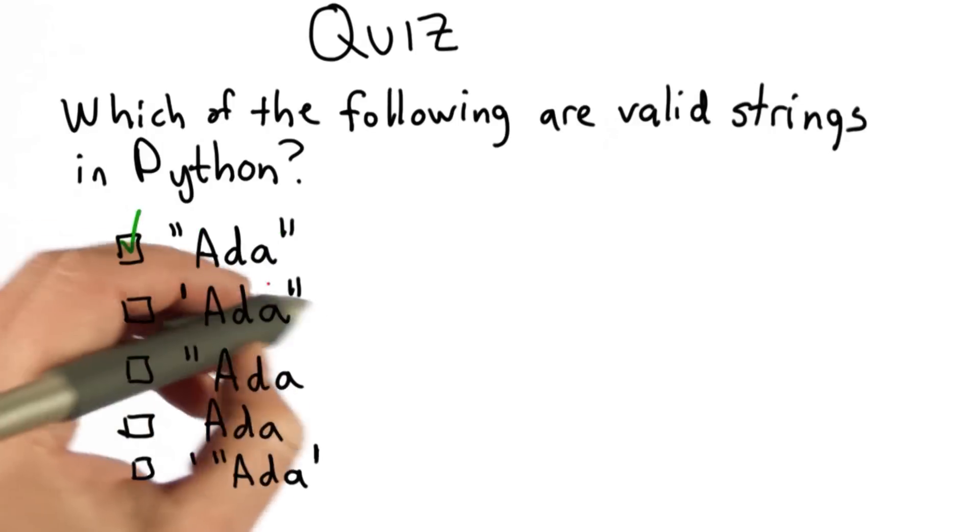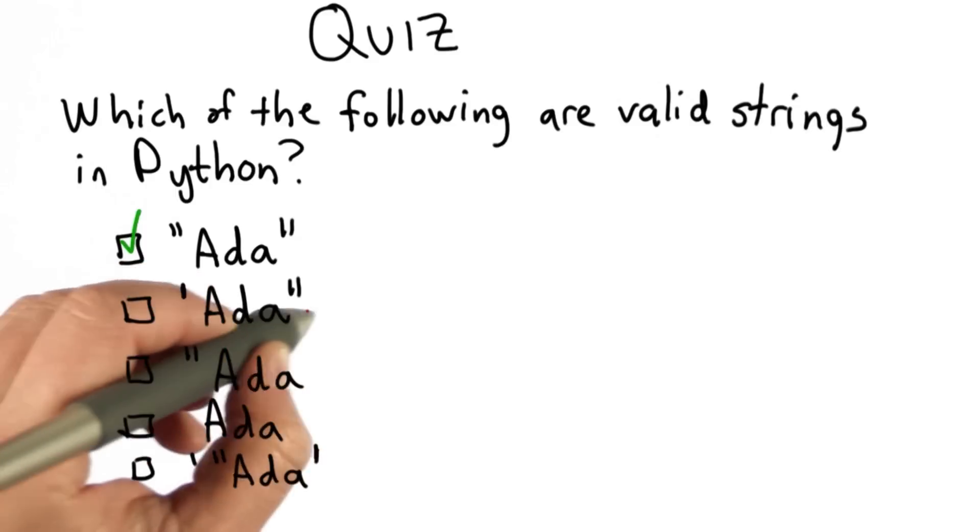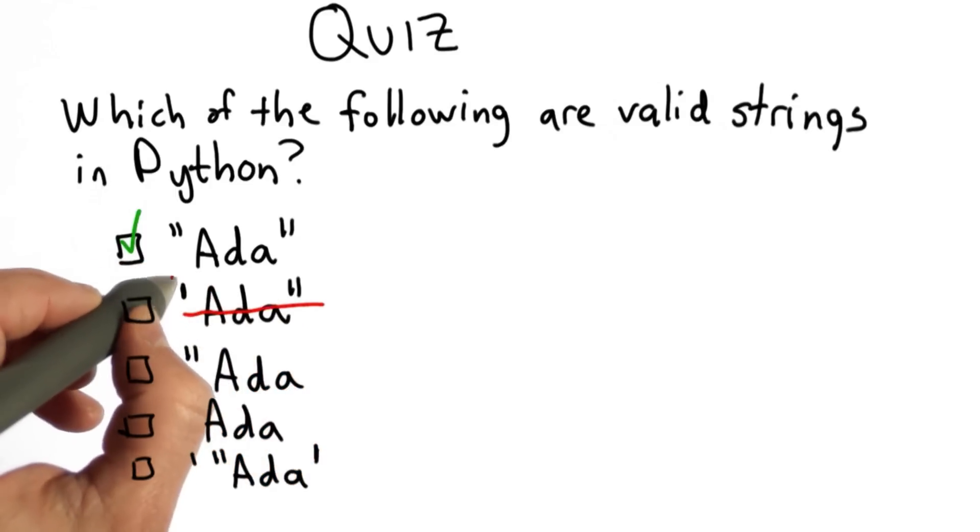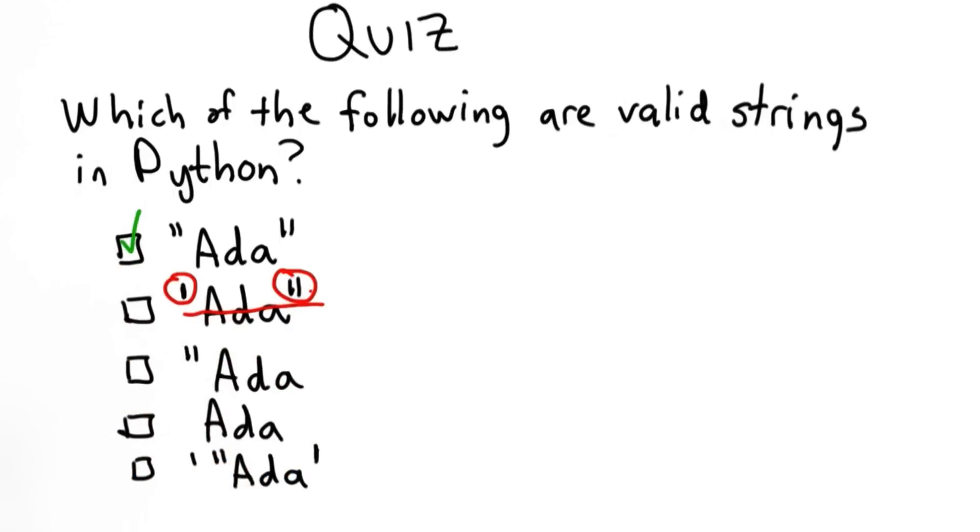The second one is not a valid string, and the reason it's not is because it starts with a single quote, but ends with a double quote. A valid string must start with the same kind of quote it ends with.